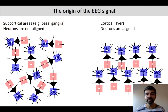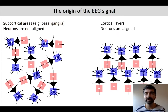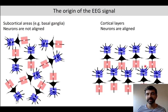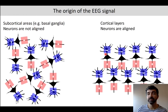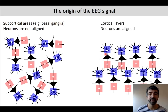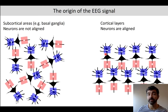In the cortical layers, however — and this is very unique in the brain — the neurons are perfectly aligned. These are the typical pyramidal cells in the cortex layers. This is why most of the EEG signal really comes from these cortical layers, which is interesting for many research questions because the cortex is very important in cognitive functions. Although it might also be interesting to look at subcortical areas, this is less suitable for EEG research.